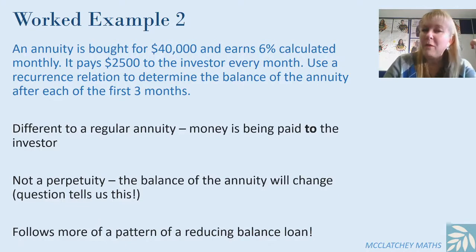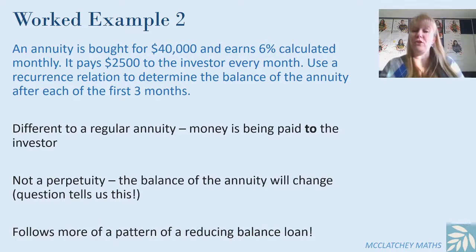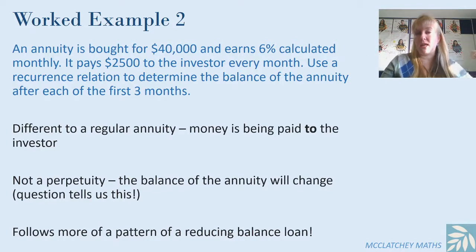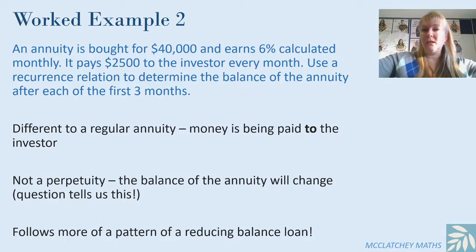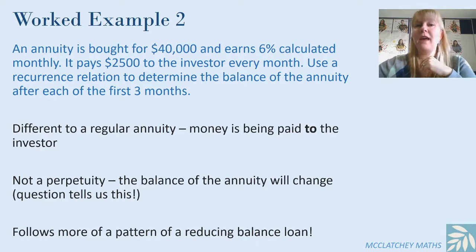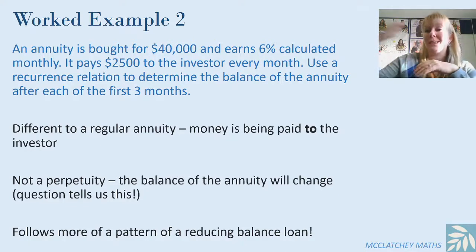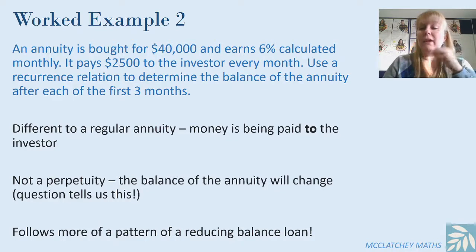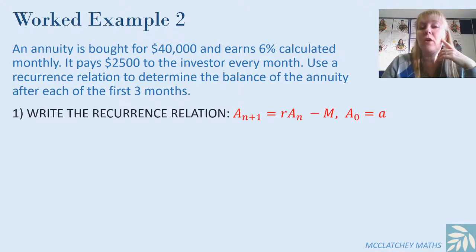We're not considering this to be a perpetuity either because there is a compounding component and the balance is going to be changing every month — that tells us straightaway it's not a perpetuity. So this is really following more of a pattern of a reducing balance loan. With a reducing balance loan, money borrowed gets interest added and then a payment is taken out, and this is the same sort of thing here: interest is being added to our investment and then we're taking money out.